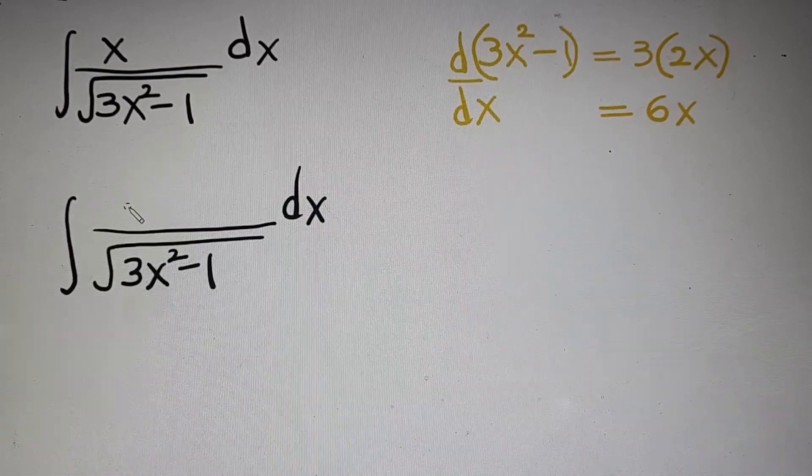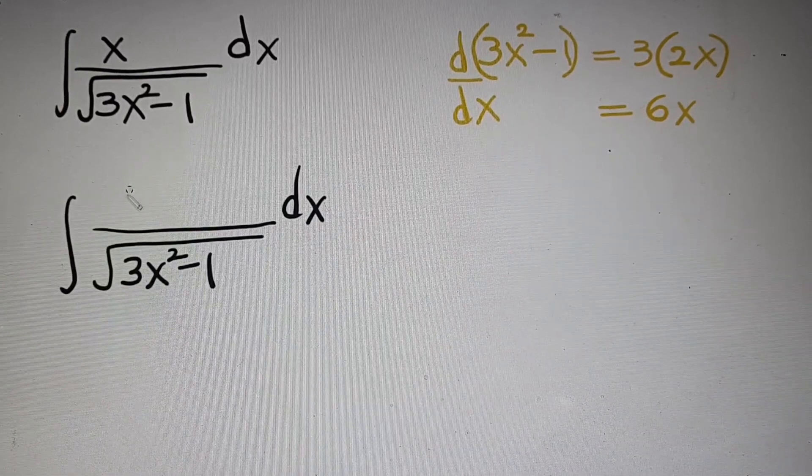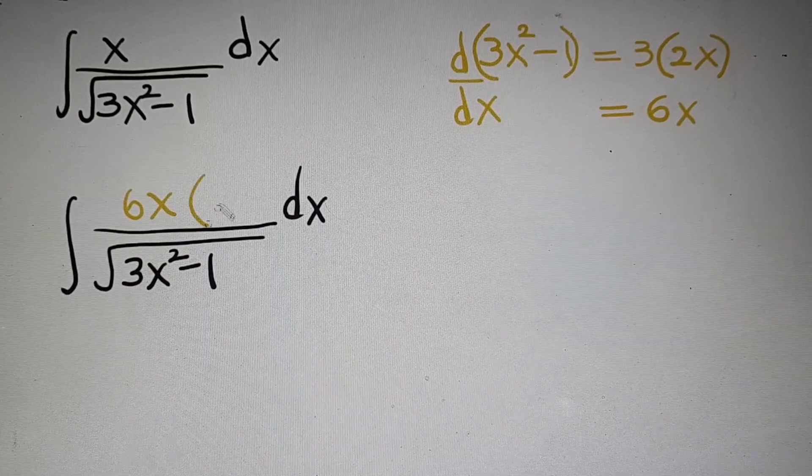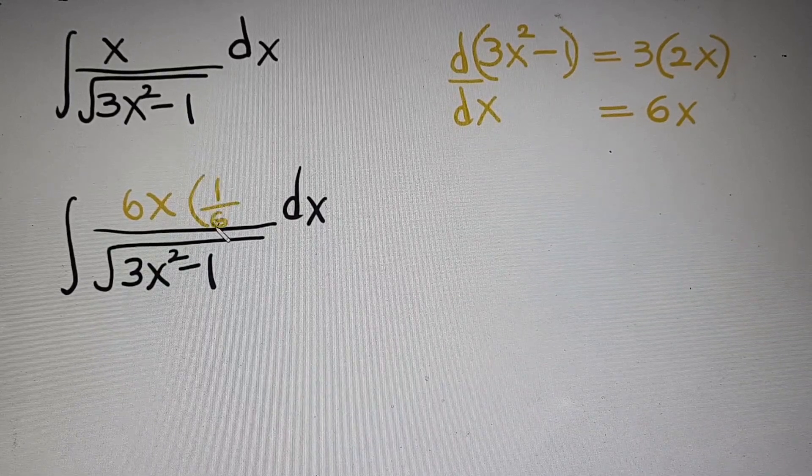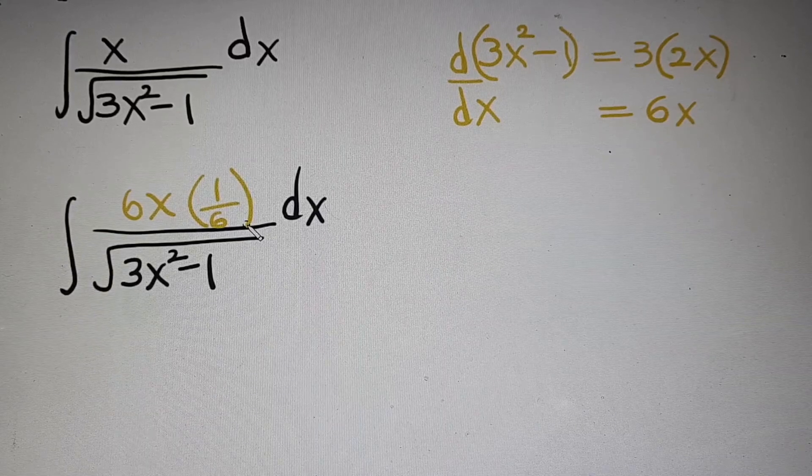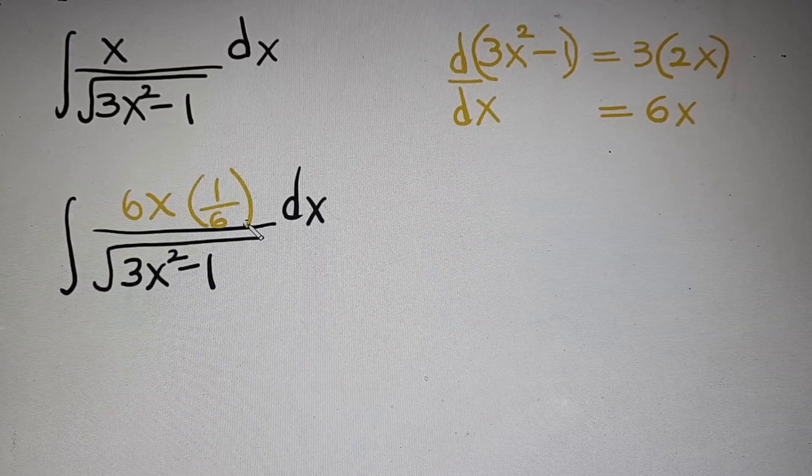Now I'm going to write this on numerator. But we cannot just change the numerator. So we should do some little math to regain the right numerator. I'm going to multiply this with 1 over 6. Then we still have the right numerator.